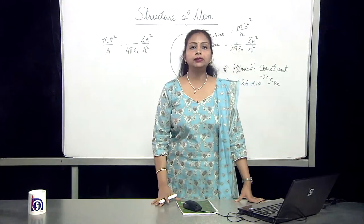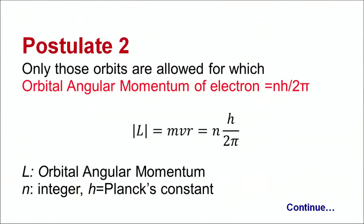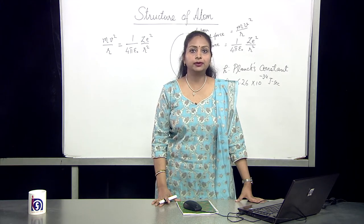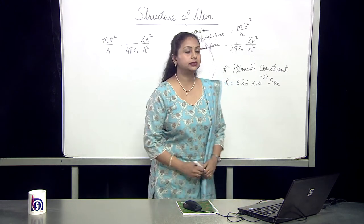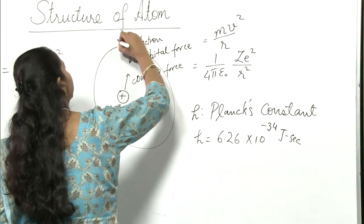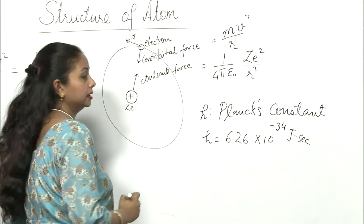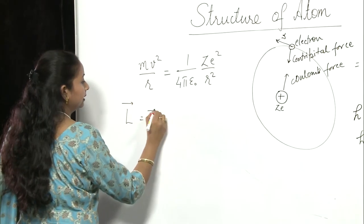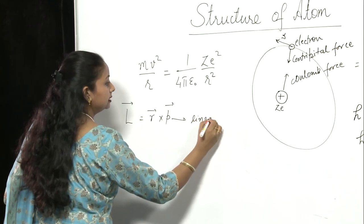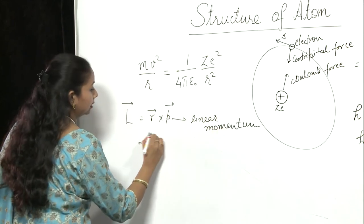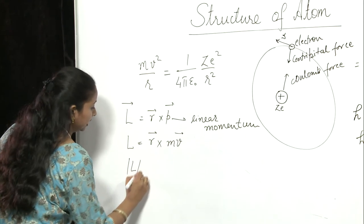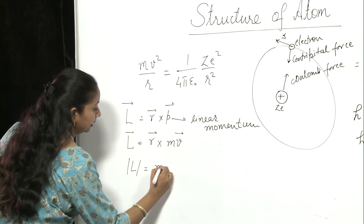Now what do we mean by orbital angular momentum of the electron? Since the electron is revolving around the nucleus, so it will possess an angular momentum which is termed as orbital angular momentum and it will have a linear velocity which will be tangential to the orbit. So the angular momentum L which is given by r cross p where p is the linear momentum. So L is equal to r cross m into v. So the magnitude of L is mvr.